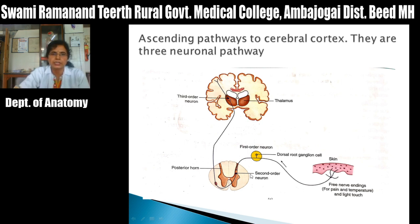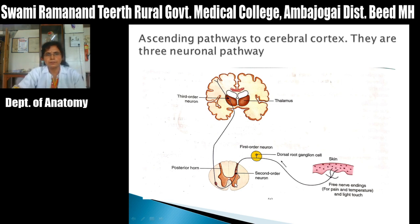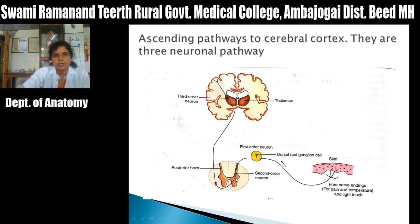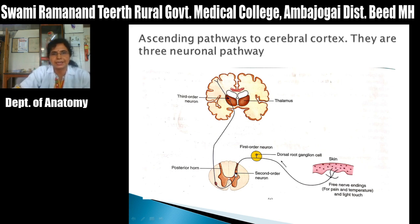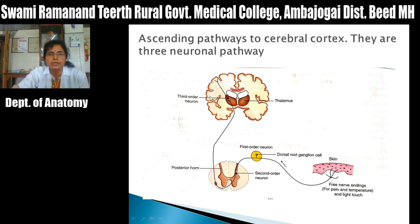In summary: the first order neuron is situated in the dorsal root ganglia; the second order neuron is situated in the dorsal horn (posterior horn) and also in nucleus cuneatus and nucleus gracilis in the lower part of the medulla; and the third order neuron is situated in the thalamus.